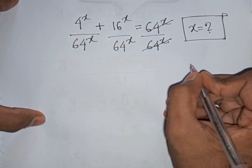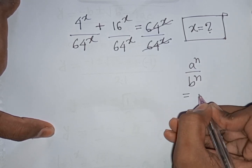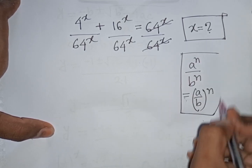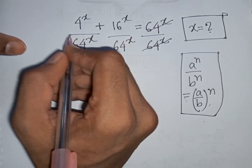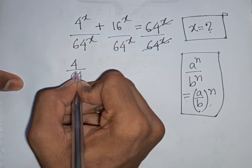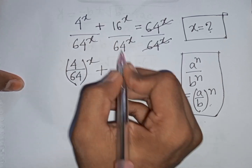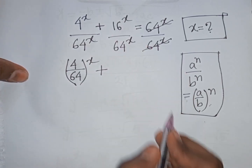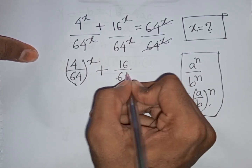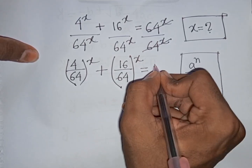Since x is the same power but on different bases, remember this formula: a^n · b^n = (a·b)^n. According to this exponential rule, we can write (4/64)^x + (16/64)^x = 1.